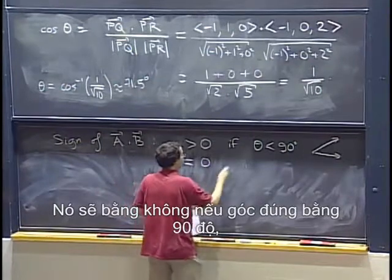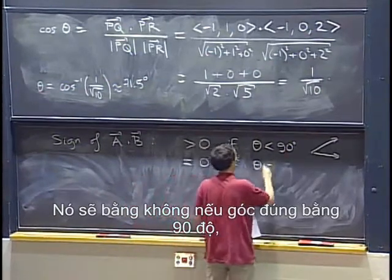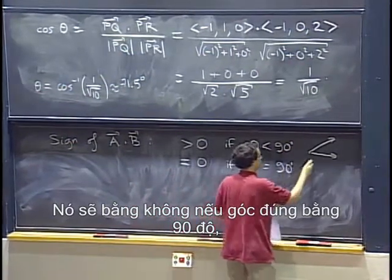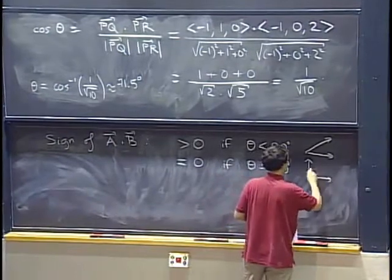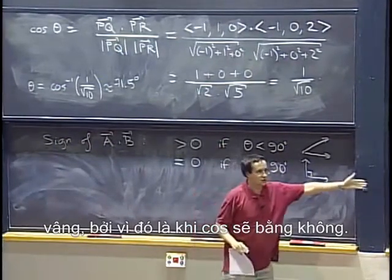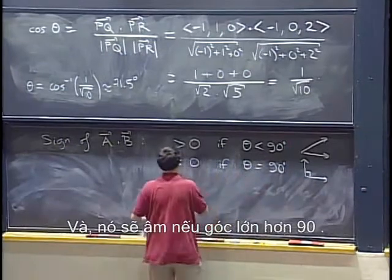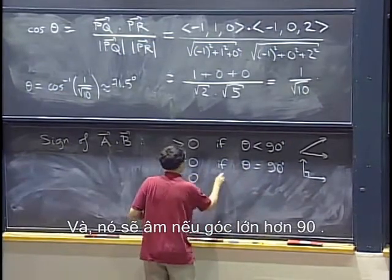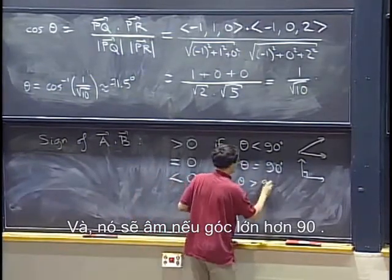It's going to be zero if the angle is exactly 90 degrees because that's when the cosine will be zero. And it will be negative if the angle is more than 90 degrees.